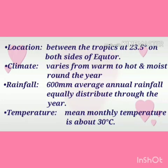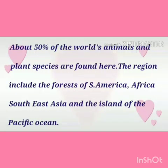Climate: the climate of this region varies from warm to hot and moist around the year. Rainfall: this region receives 600 mm average annual rainfall which is equally distributed through the year. Temperature: the mean monthly temperature is about 30 degrees centigrade. About 50% of the world's animals and plant species are found here. The region includes the forests of South America, Africa, Southeast Asia and the islands of the Pacific Ocean.